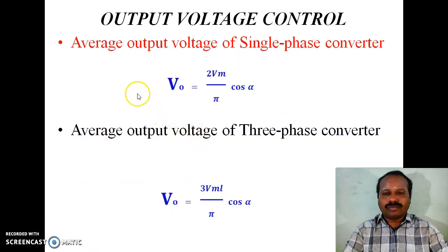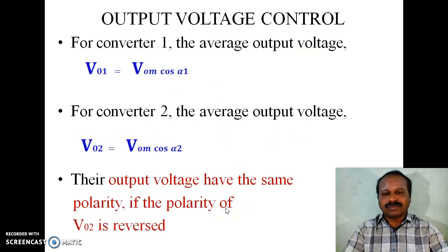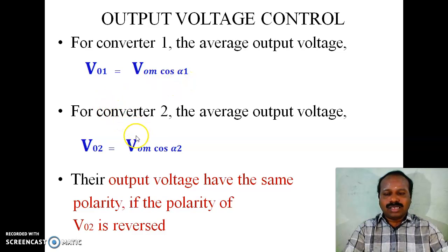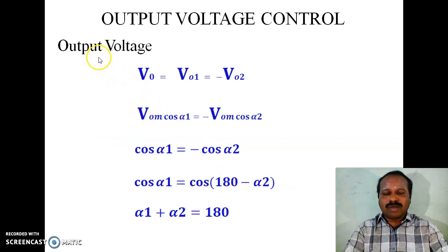Output voltage control: the average output voltage of a single-phase full converter is given by V0 = 2Vm/π × cos(alpha). Similarly, the average output voltage of a three-phase full converter is given by V0 = 3Vm/π × cos(alpha). For Converter 1, the average output voltage is V01 = V0m × cos(alpha 1). For Converter 2, the average output voltage is V02 = V0m × cos(alpha 2). Their output voltages have the same polarity if the polarity of the second converter V02 is reversed; that is, V0 = V01 = −V02.